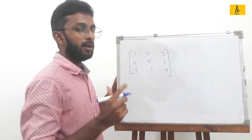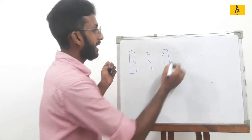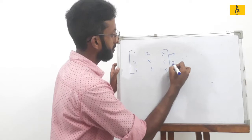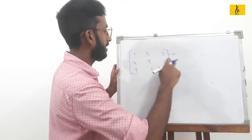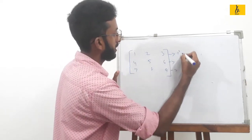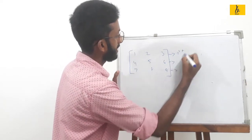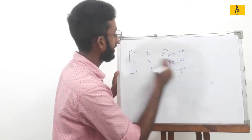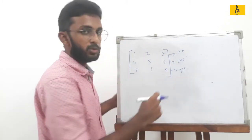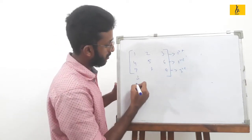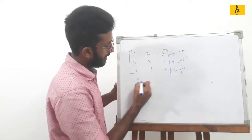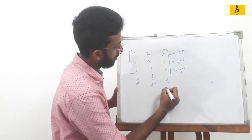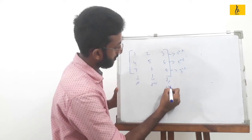This is the column. This is the row. This is the first row, the second row, the third row. This is the first column, the second column, and the third column of the matrix.